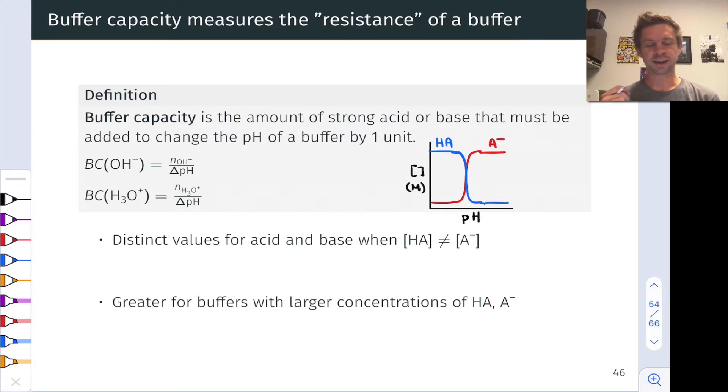Quantitatively, we can think of it as the amount of strong acid or base that must be added to change the pH of a buffer by one unit. This definition gives us a sense of how many moles of strong acid or base it really takes to overwhelm the buffer by pushing the pH to plus or minus one unit.